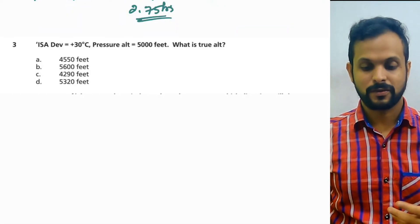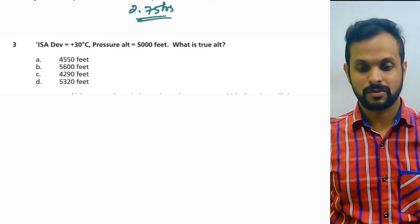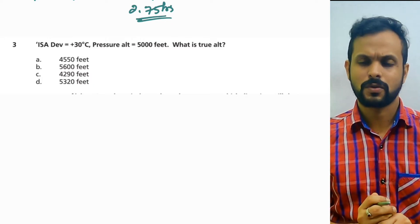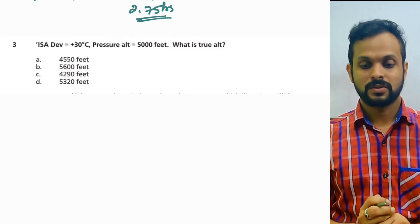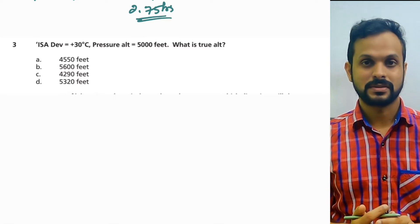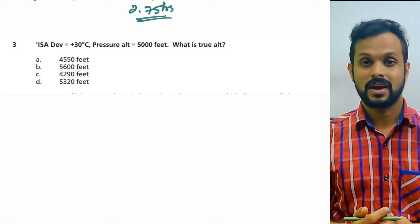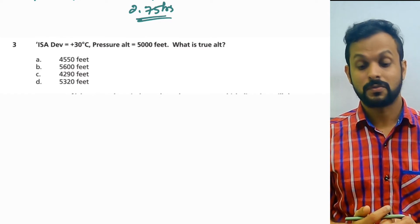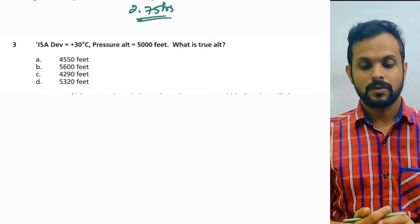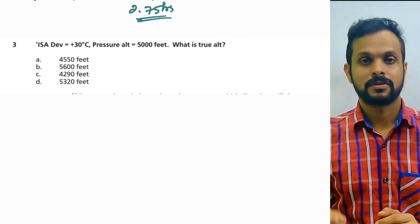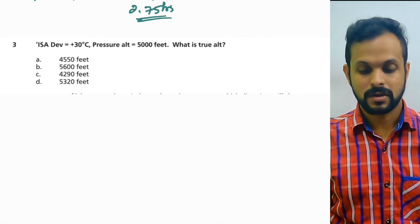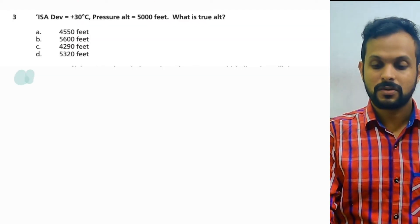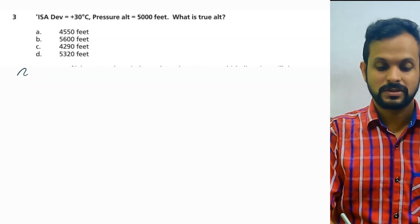I hope you're holding up — we are going at a very quick pace. Question number three: ISA deviation is plus 30 degrees Celsius, pressure altitude 5000 feet. What is true altitude? This is one type of question where you need paper and pen to get the answer done. It does appear for the nav exams, and this question is particularly interesting because you can do it in two different ways.